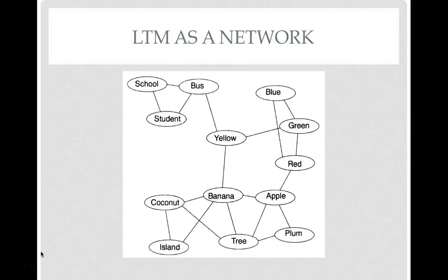In long-term memory as a network, different pieces of information branch out from one idea. For example, the word 'yellow' might trigger 'bus,' which activates a whole web of knowledge around school and students. Yellow can also trigger 'colors,' activating that entire network of memory. One concept connects to many related ideas.